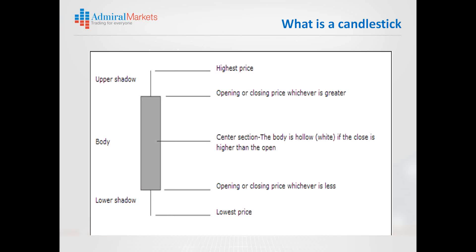Just a quick repeat on candlesticks in case you didn't see last week. The candle is a type of bar or formation you can use on your chart. Other options include line bars, lines, and range bars, but Japanese candlesticks are tremendously popular. The wick at the top represents the highest price, the wick at the bottom the lowest price, and the body represents the opening or closing price. If the open is at the bottom and close at the top, it's bullish; opposite is bearish.